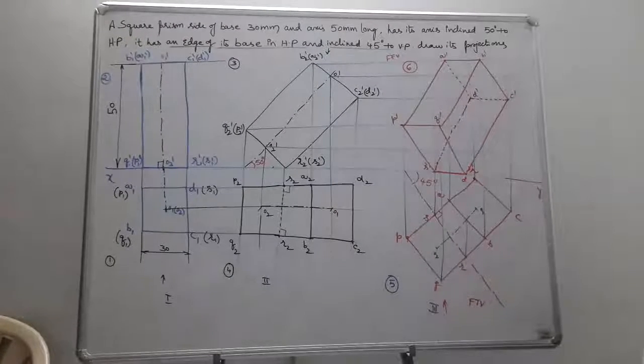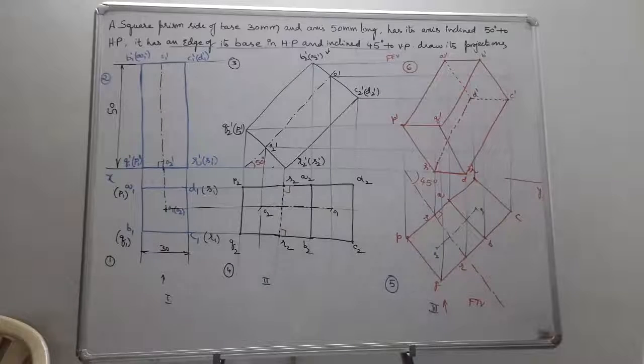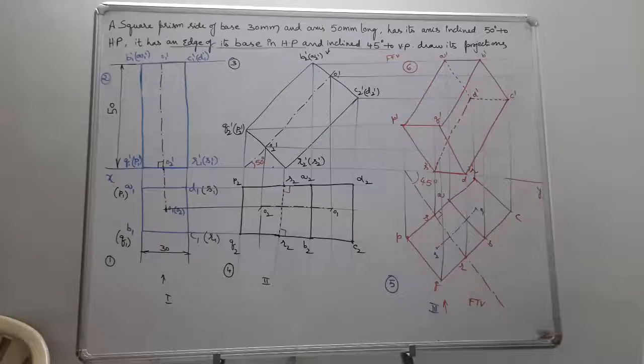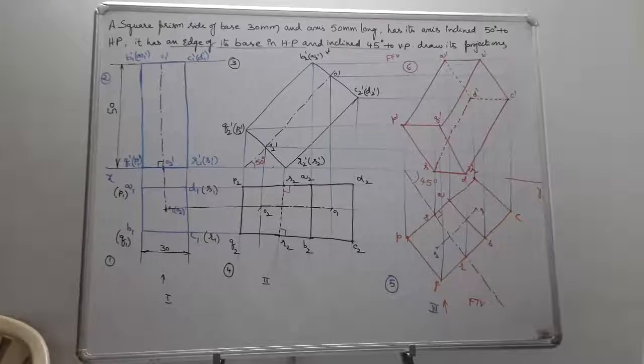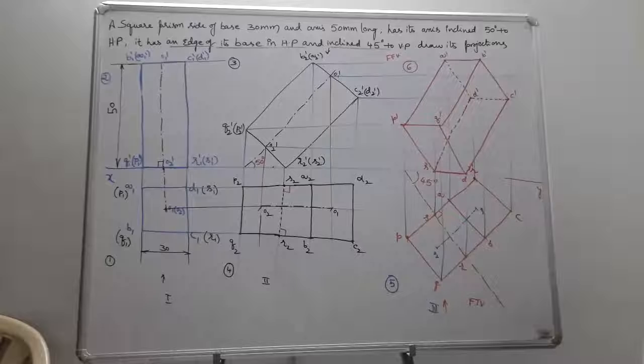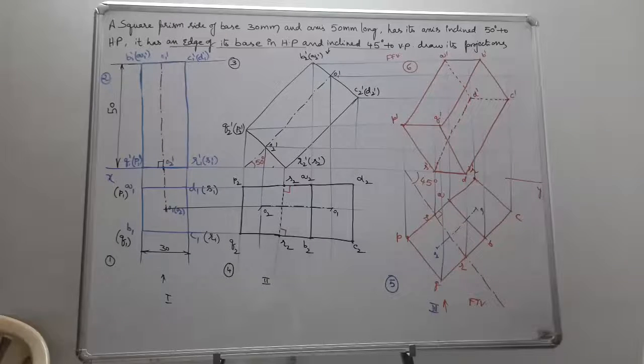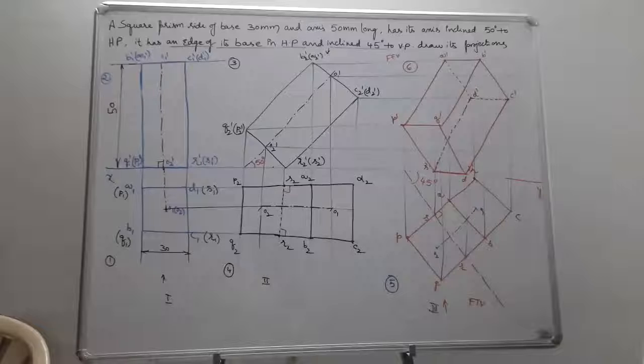Student, is it clear? From sixth step, we can say that the farthest point from the observer in the fifth step we obtained is D point. So simply don't get confused. D is going to be the farthest point; the lines which are passing from D are going to be dotted lines. Is it clear? Any doubts?